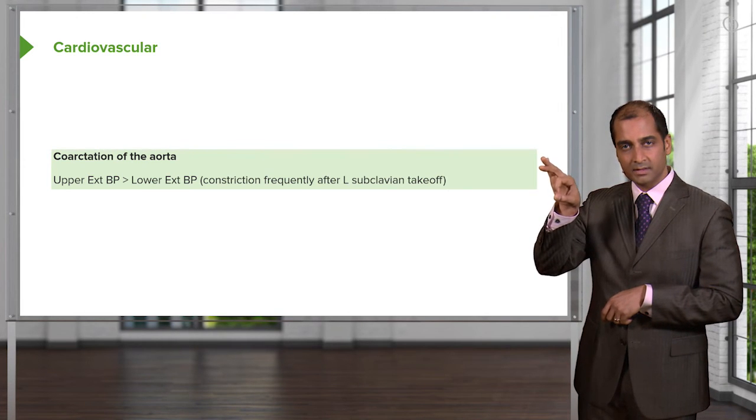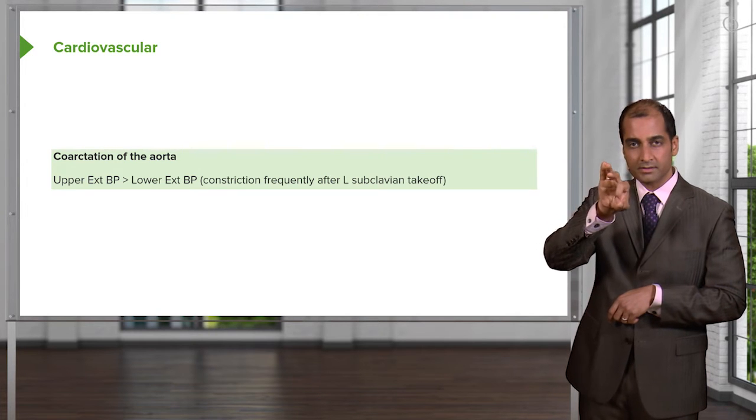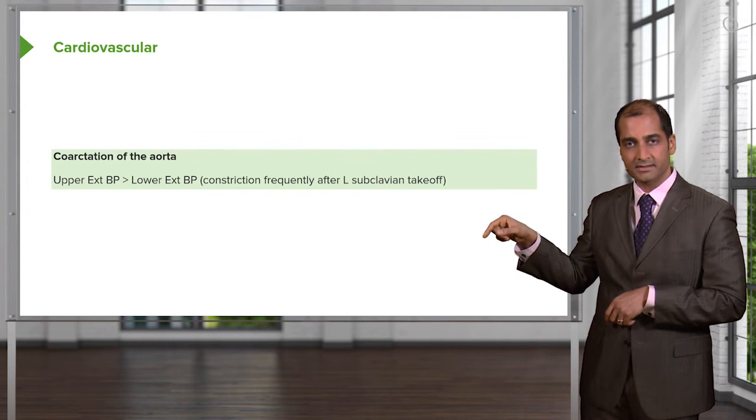When you added a resistor in the middle, what then happened to the pressure proximally? It increased. What happened to the pressure distally? It decreased. What did you do? You added a resistor in a series.